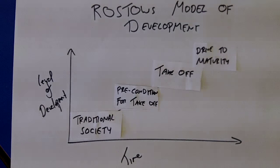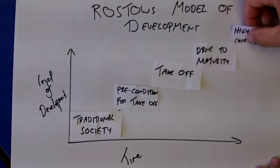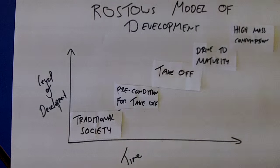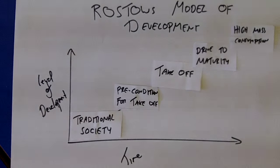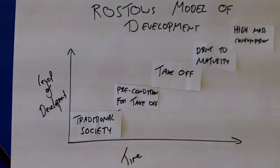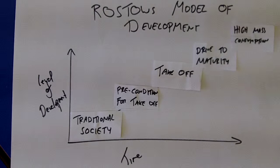The fifth stage Rostow described is high mass consumption. Rostow reckoned the US was the first country to reach this stage, around the 1950s. You have mass consumption lifestyles, wealthy and highly industrialised countries producing loads of goods, trading internationally, and completely interlinked with other countries through globalisation. That's what Rostow suggested happens.